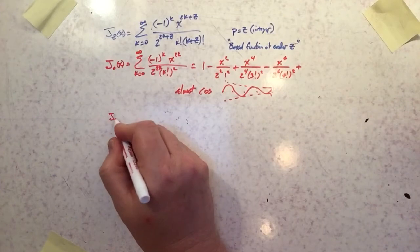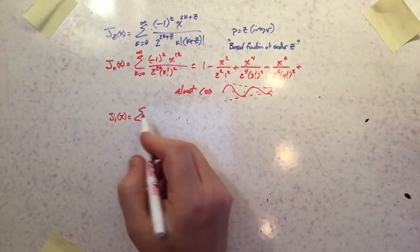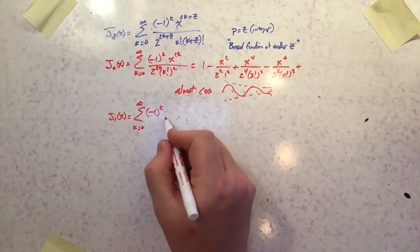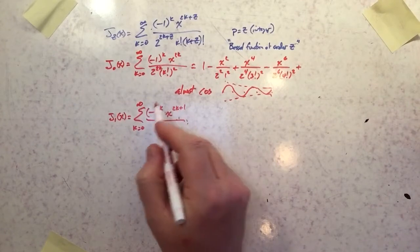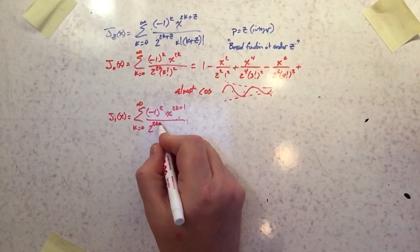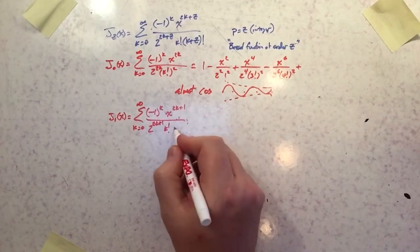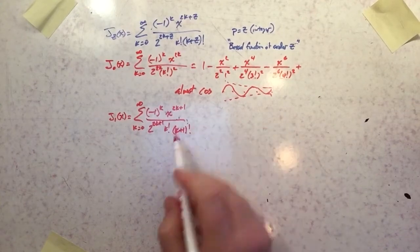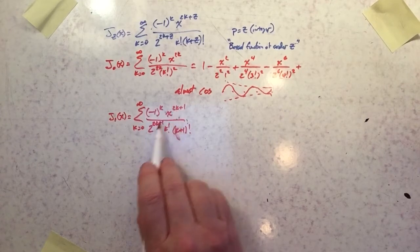Let's also look at J1. So J1 would be summation k equals 0 to infinity negative 1 to the k and now it's going to be x to the 2k plus 1 so it's going to produce all odd orders. It's still going to alternate though and then the denominator is going to be 2 to the 2k plus 1, k factorial and then k plus 1 factorial. So this will always be factorials of two consecutive numbers, k and the next one up.